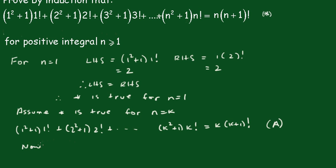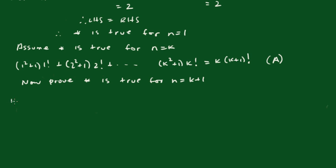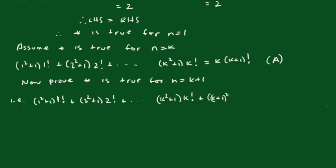Now we prove the statement is true for n equals k plus 1. We need to show that 1 squared plus 1 times factorial 1, plus 2 squared plus 1 times factorial 2, all the way along to k squared plus 1 times factorial k, plus (k+1) squared plus 1 times (k+1) factorial, equals (k+1) times (k+2) factorial. This extra term is the additional bit we add.